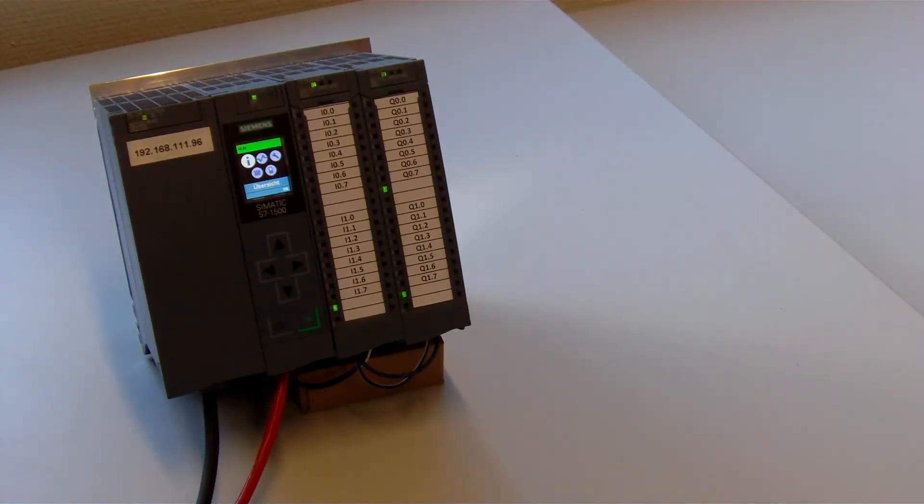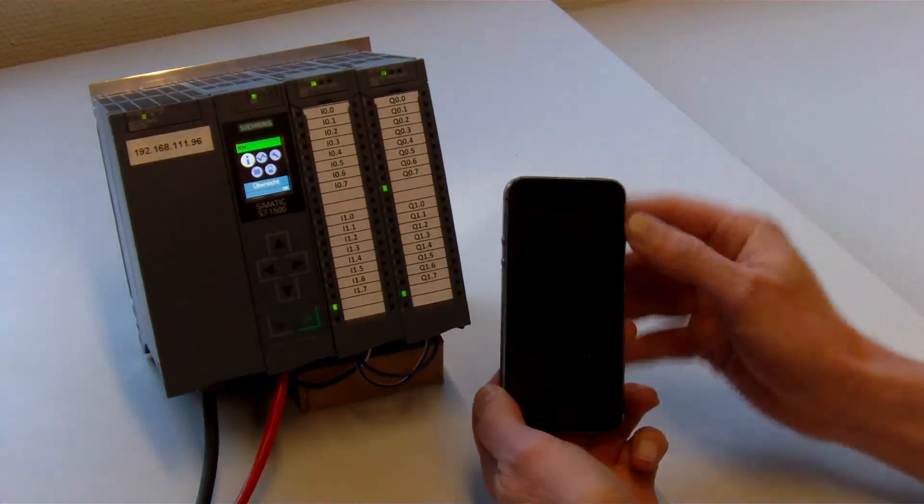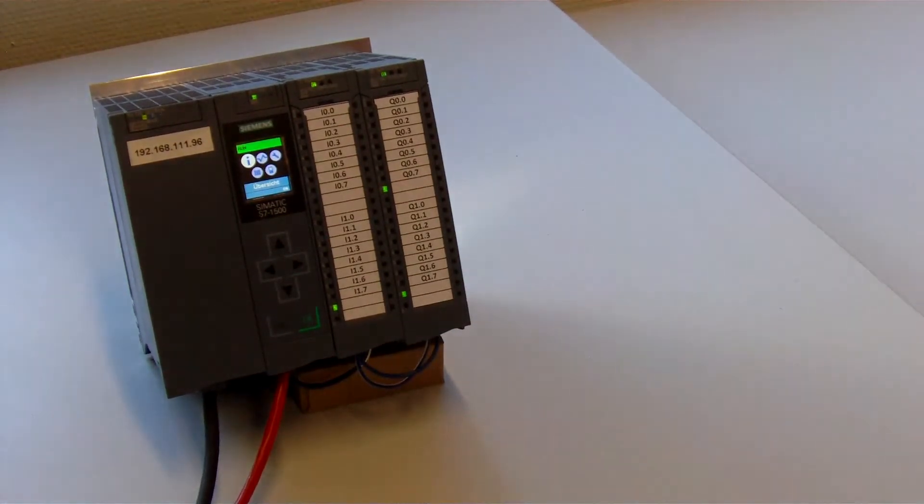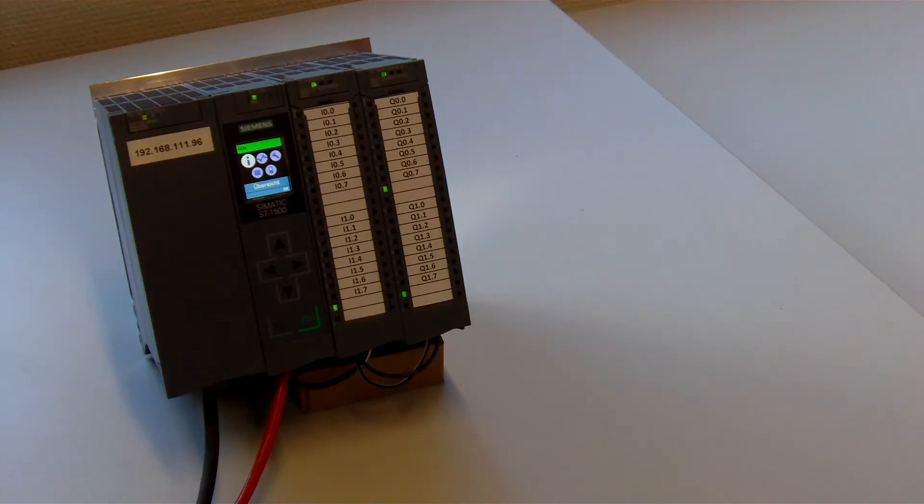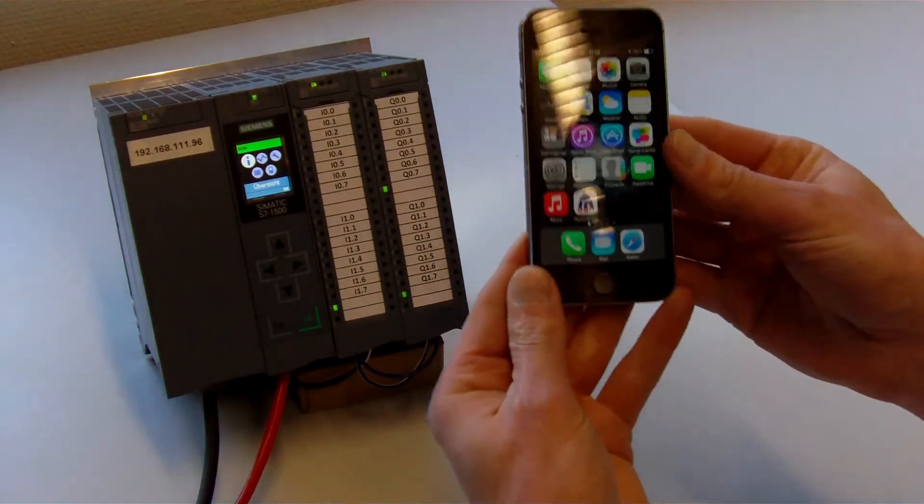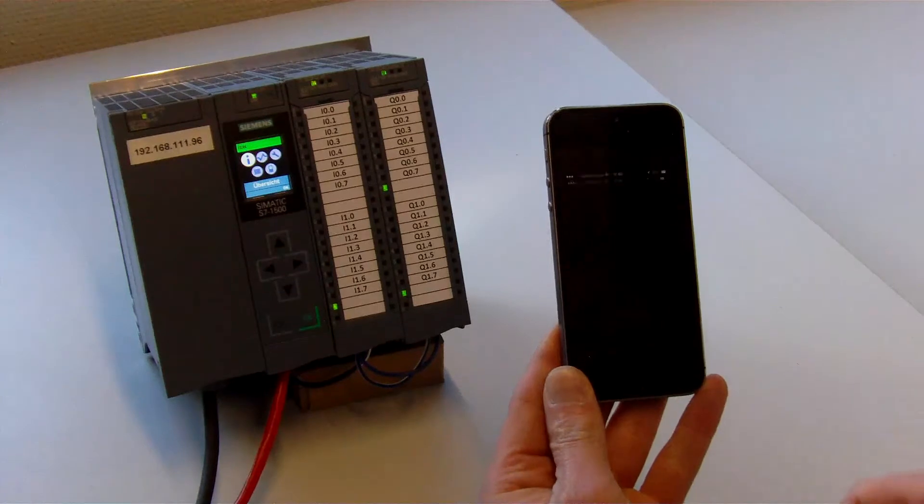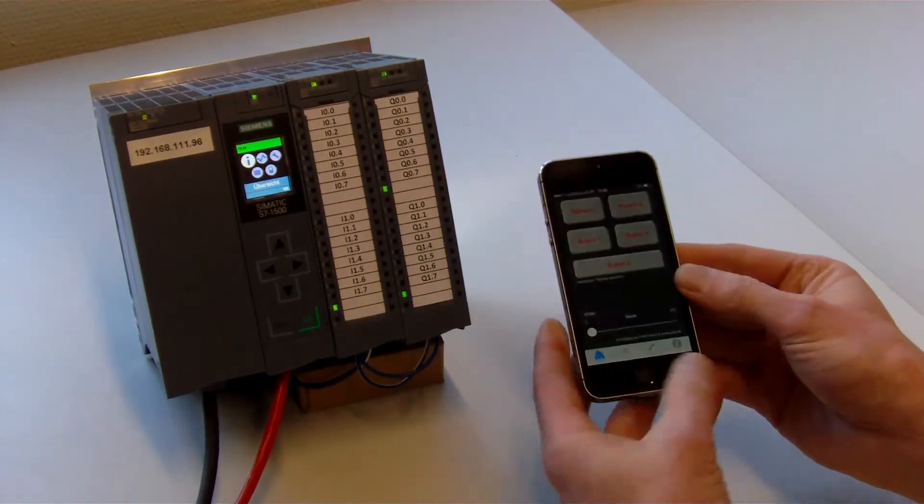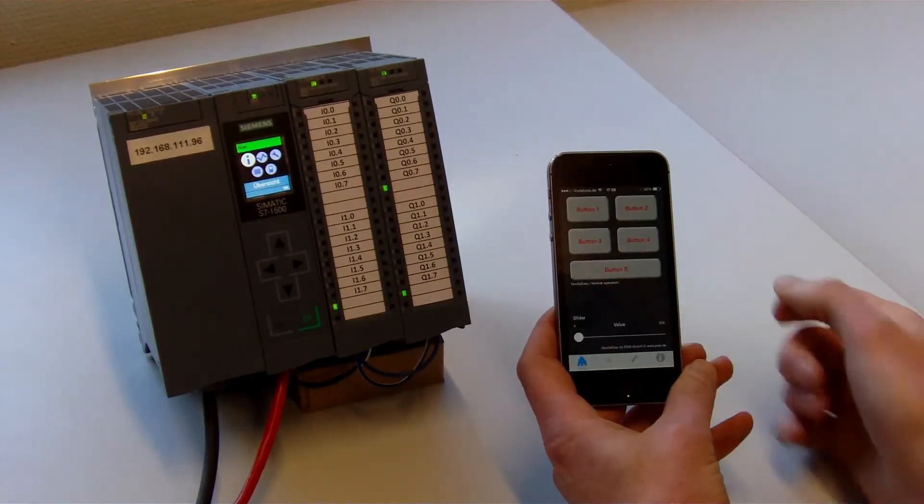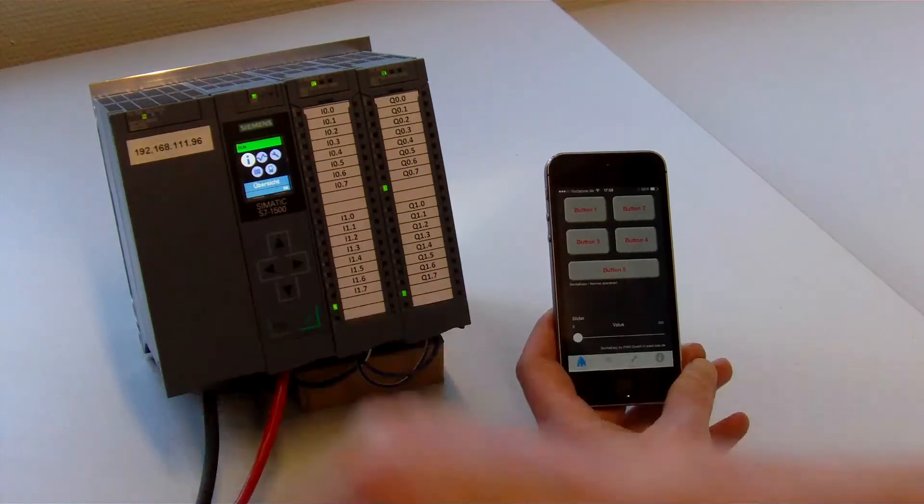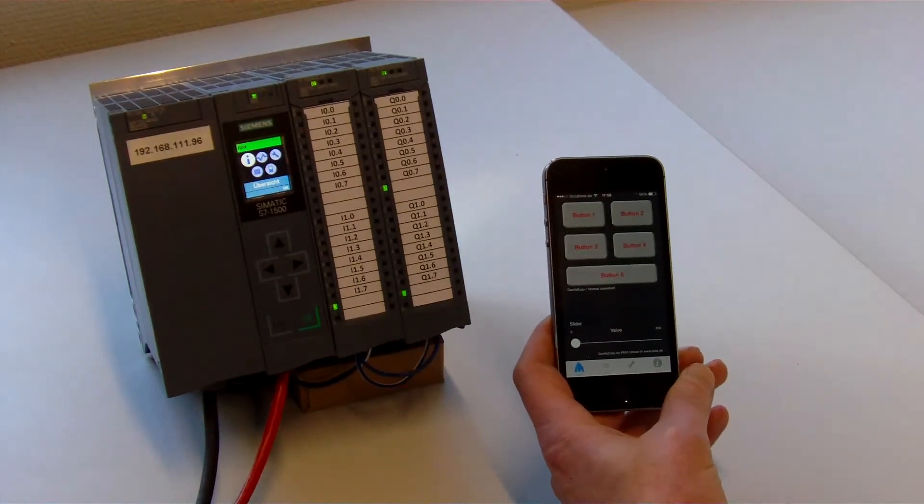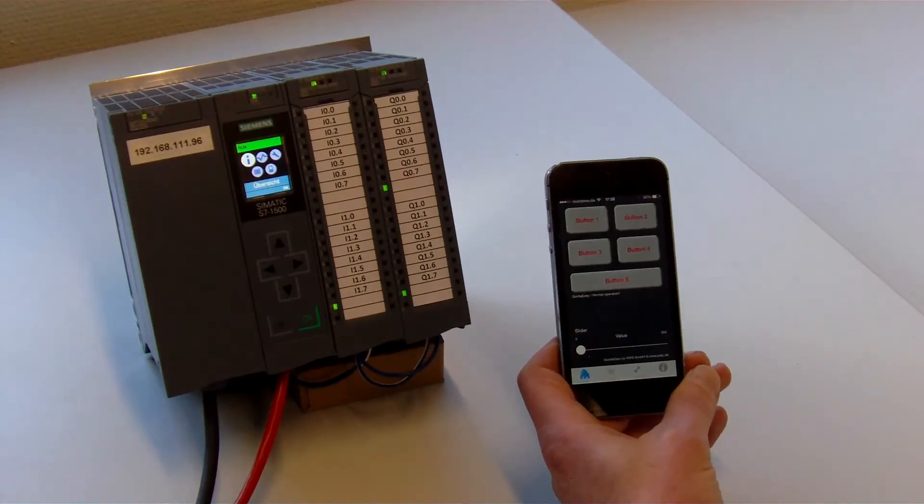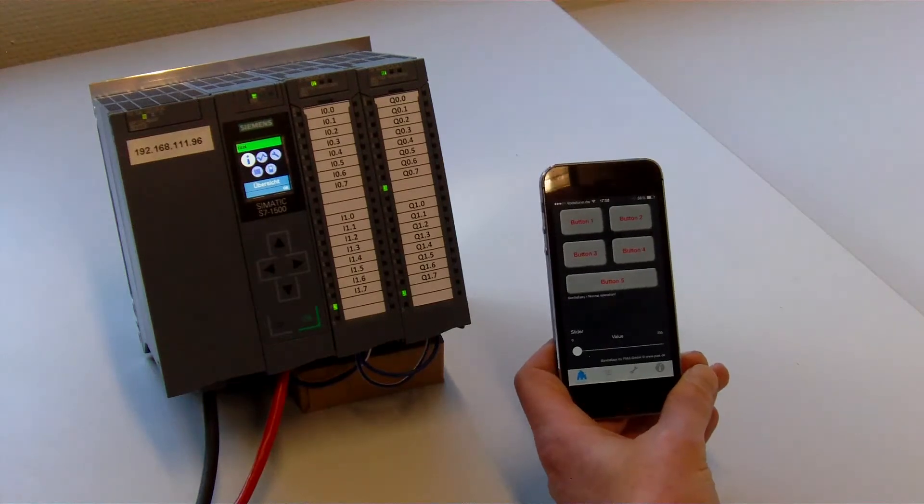Ok, let's see the application in action. I start our app. Here we go, I hope you can see this. I start the Gorilla Easy app. And it connects immediately to the PLC when the settings are correct. I use the settings here. In this IP address you can also enter a host name if the PLC has an assigned host name.